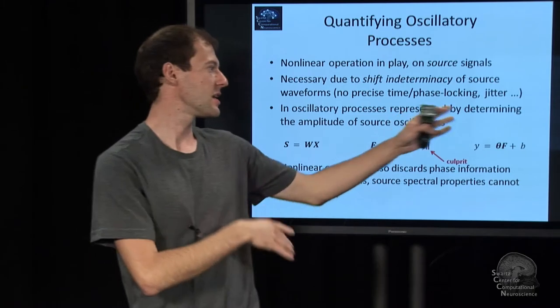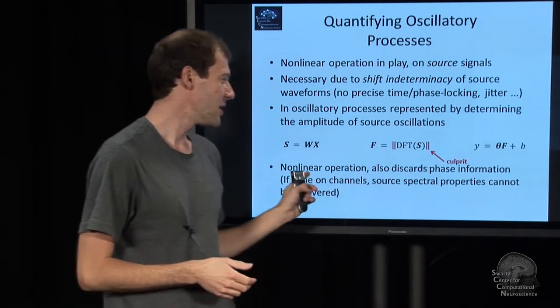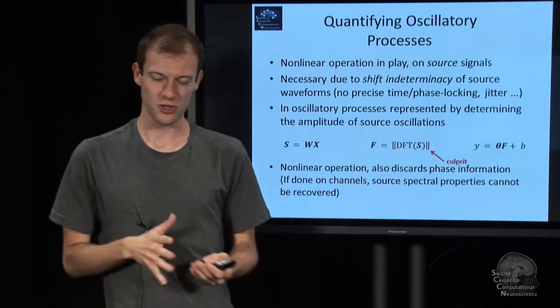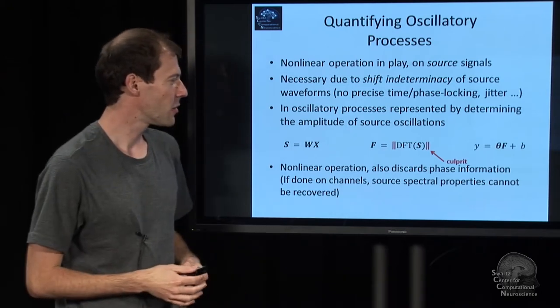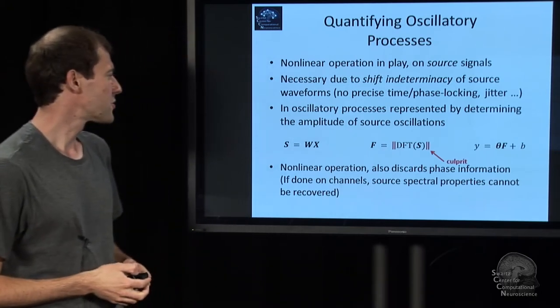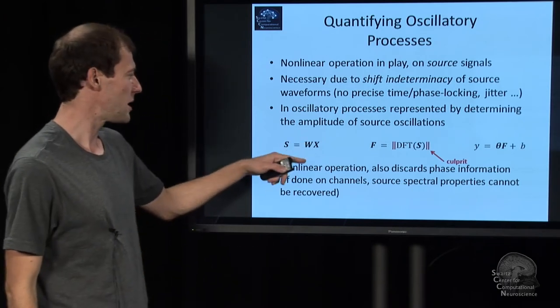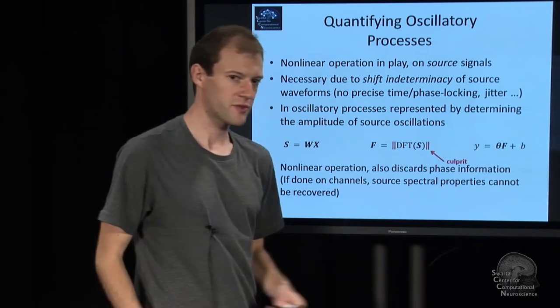The source time courses are linearly dependent on the channel data. There's a linear step first, then comes a nonlinearity, and then comes a classifier. So if you throw the information away before you even get to the sources, there's no way a classifier can fix that.